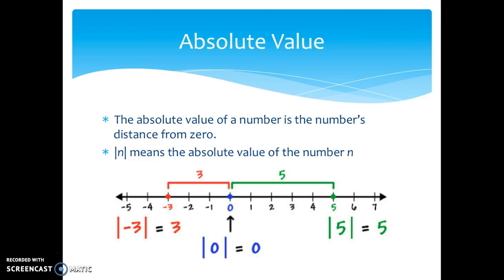If you look in the blue, we have zero itself. The absolute value of zero is zero because zero is no spaces away from itself. If you look at 5 in the green, the absolute value of 5 is 5 because 5 is 5 spaces away from zero.